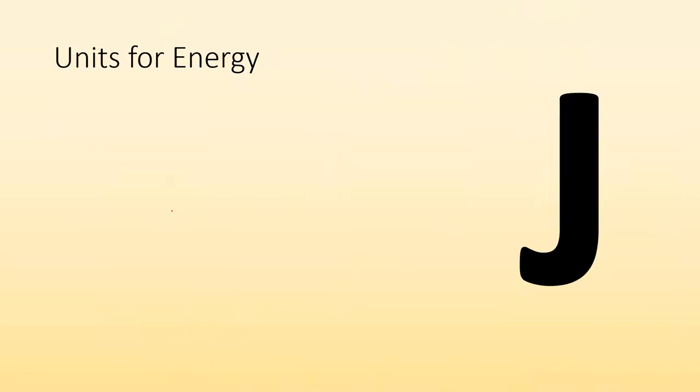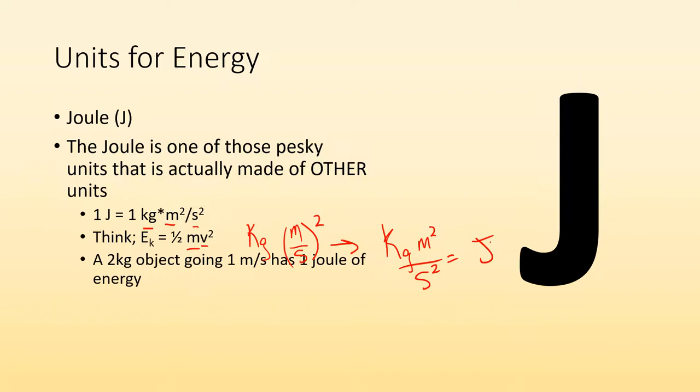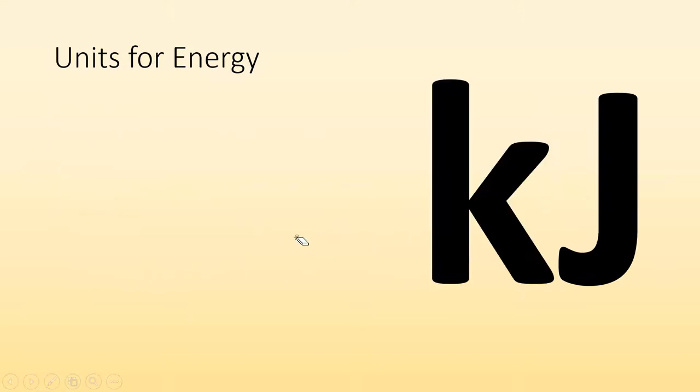So how do we quantify it? How do we describe how much? Well, the unit that we use to describe how much energy is called the joule. And the joule is one of those pesky units where it's actually made of other units. One joule is one kilogram times meters squared divided by seconds squared. And you might think, well, how am I going to remember that? If you already remember the formula for kinetic energy, you could just think what units would you plug in? For mass, it would be kilograms. For velocity, it'd be meters per second, and then you're squaring that. So a two kilogram object going one meter per second would have one joule of kinetic energy.